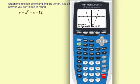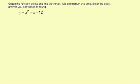It says minimum x equals 0.5000058. Now this 58 I'm assuming is a roundoff error. And it also says y equals negative 12.25. So I'm going to enter that in for my vertex: 0.5 comma negative 12.25.